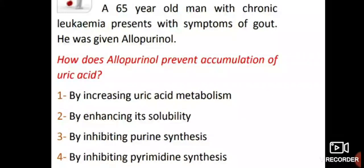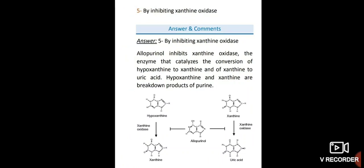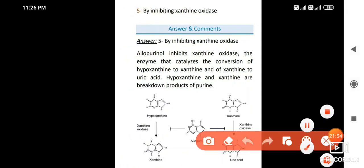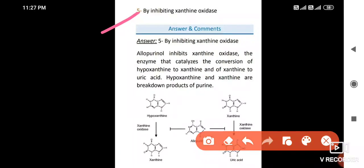A 65-year-old man with chronic leukaemia presents with symptoms of gout. He was given allopurinol. Allopurinol prevents accumulation of uric acid by acting as a xanthine oxidase inhibitor — it inhibits xanthine oxidase, the enzyme that catalyses the conversion of hypoxanthine to xanthine and of xanthine to uric acid. Hypoxanthine and xanthine are breakdown products of purines.